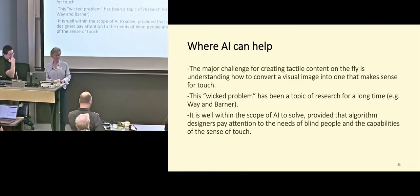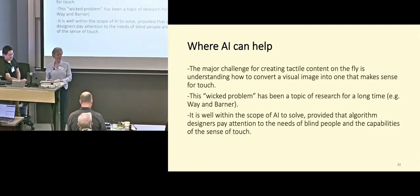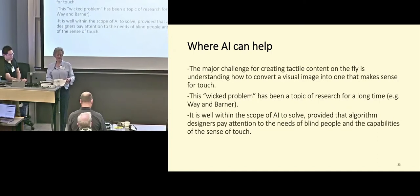Where can AI help? The wicked problem is doing any of this in a just-in-time way — taking visual content and massaging it so it makes sense to the sense of touch. This has been worked on since the 1980s, back to the work of Way and Barner. AI has a good shot at solving this problem, provided people pay attention both to what blind people want and need, and to the limitations of the sense of touch. For instance, transcribers like to know the age of the children they're working for and their level of tactile literacy, as these factors change how a tactile image should be designed.